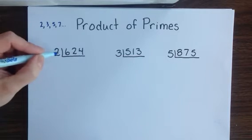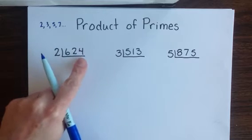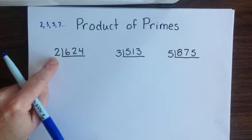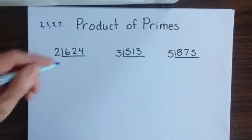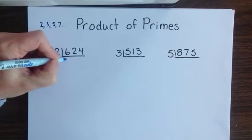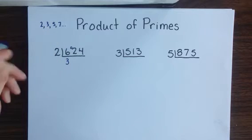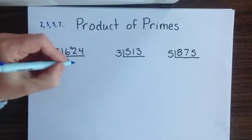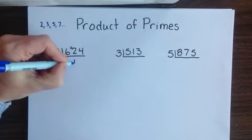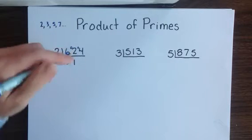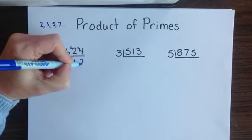Looking at the first one: because 624 is an even number, it will divide by 2. So that's where we'll start. 2 fits into 6 three times with a 0 remainder. Then 2 fits into 2 once, also with a 0 remainder, and fits into 4 two times.